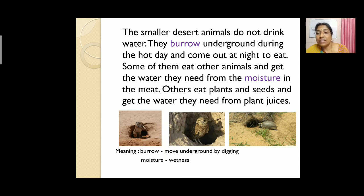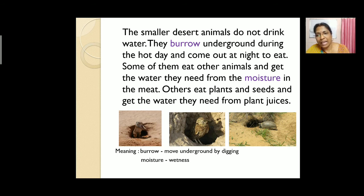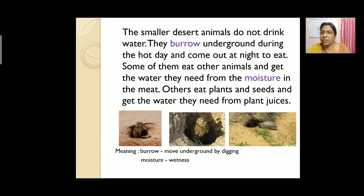Others eat plants and seeds and get the water they need from plant juices. Animals like camels eat plants or seeds and obtain moisture from plant juices, which is enough for them to survive.